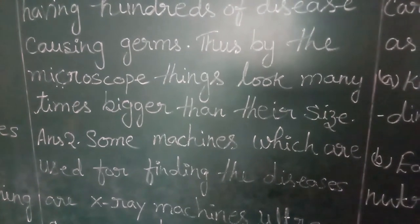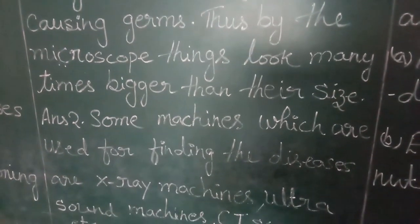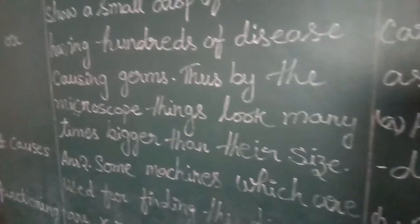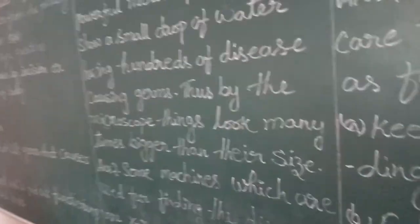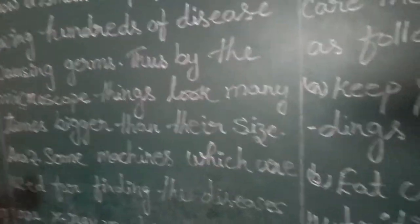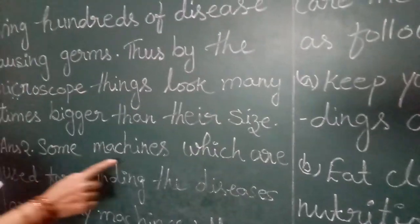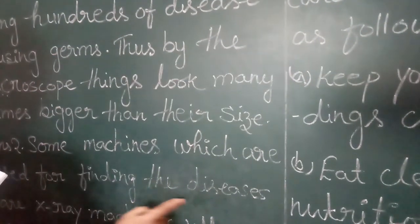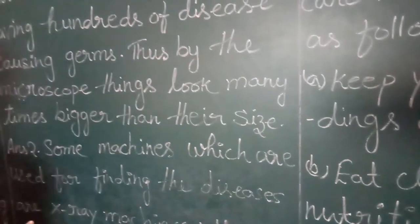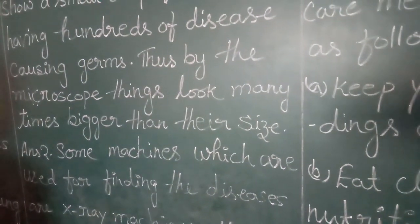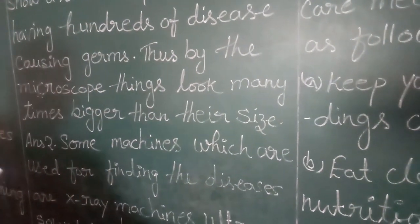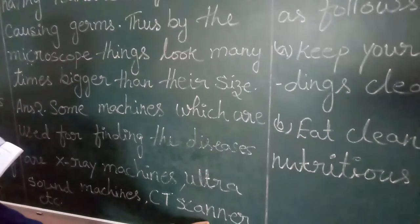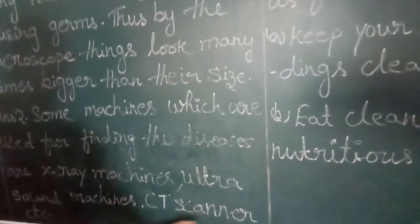Question number 2: Name some machines used for finding diseases. Answer: Some machines used for finding diseases are the X-ray machine, ultrasound machine, and CT scan, etc.